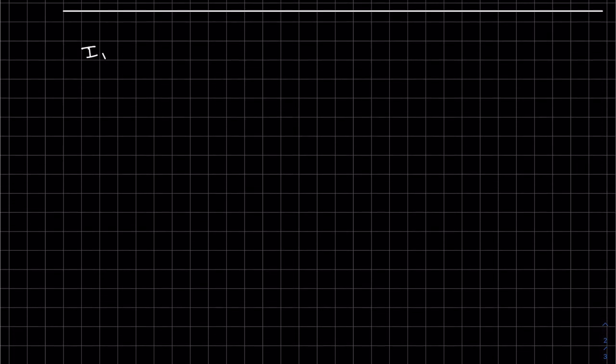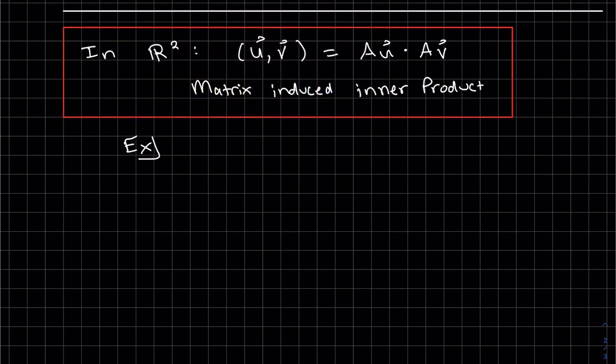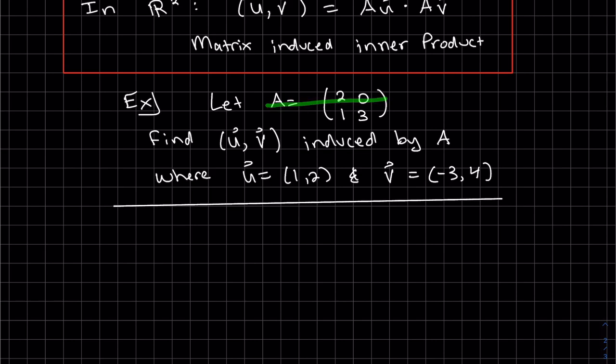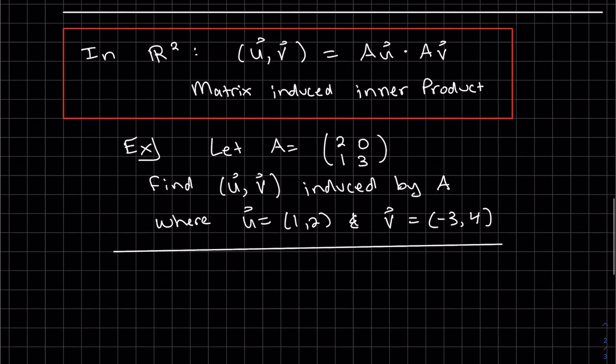Okay, let's look at another example. So this inner product is a matrix A times vector u dot product with A times V. And this is called the matrix-induced inner product. Let's do an example. So given a matrix A and given the two vectors u and v, we want to find the inner product induced by A. So we're going to use this formula right here that we just went over. We want to find the dot product of Au dot Av. So first we need to find Au, and then we need to find Av.